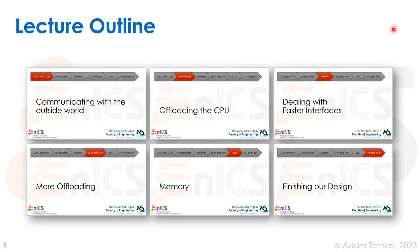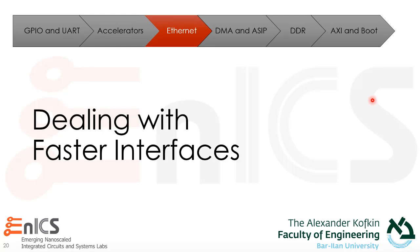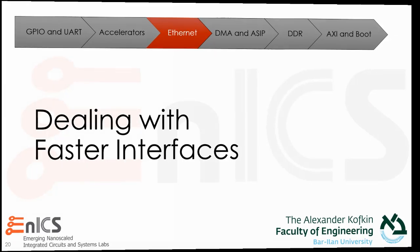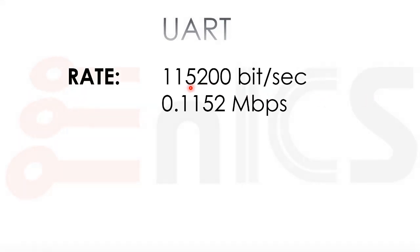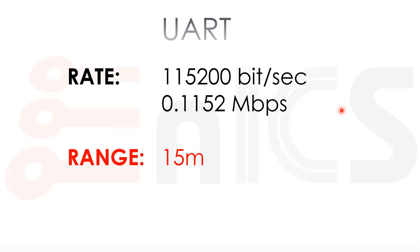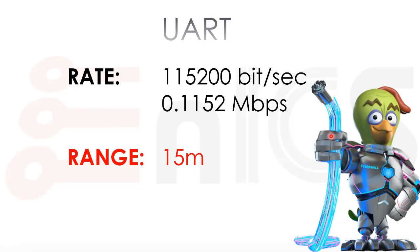In the last part of our talk, we discussed how to offload the CPU by making UART a controller. But is that really enough for faster interfaces? UART has a maximum rate of 150 kilobits per second — 0.1152 megabits per second — which is much slower than home internet. And since we're building a router, that's not sufficient. Also, UART's maximum range is 15 meters, but we need to go all the way across the world, so we need to move on to something better, like fiber optic.